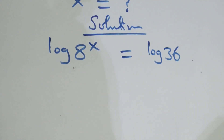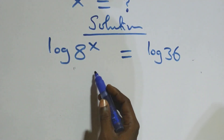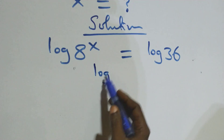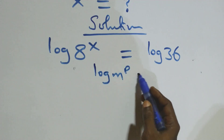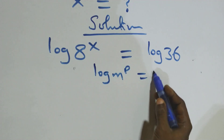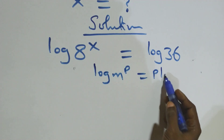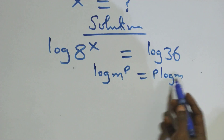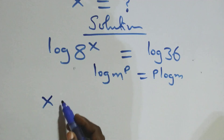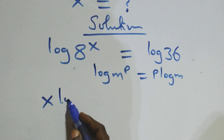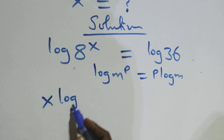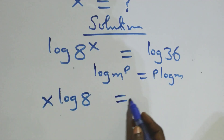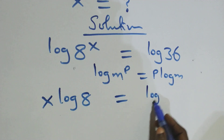Next step, we apply the rule of logarithms: when we have log m raised to power p, this is the same thing as p log m. So here this becomes x log 8 equals to log 36.